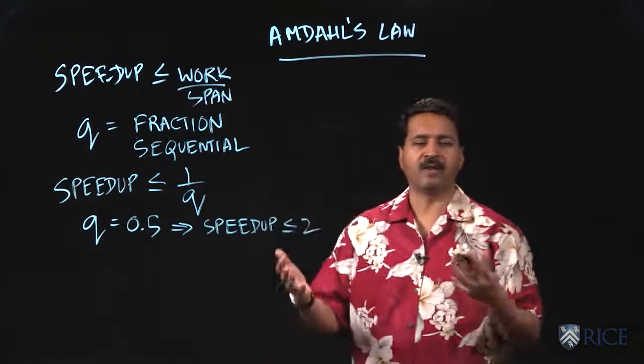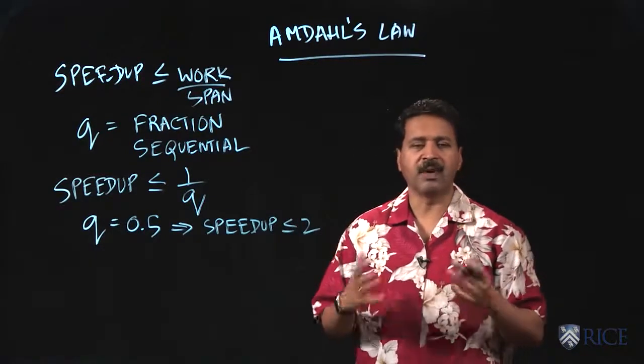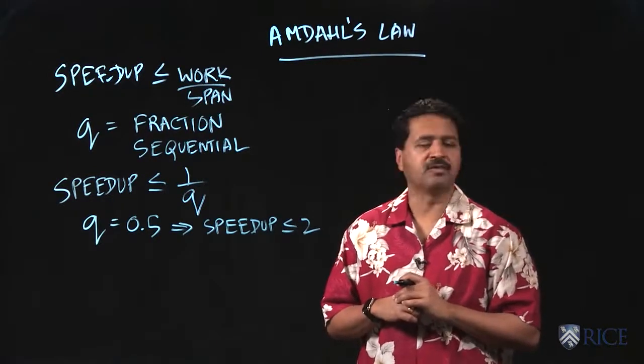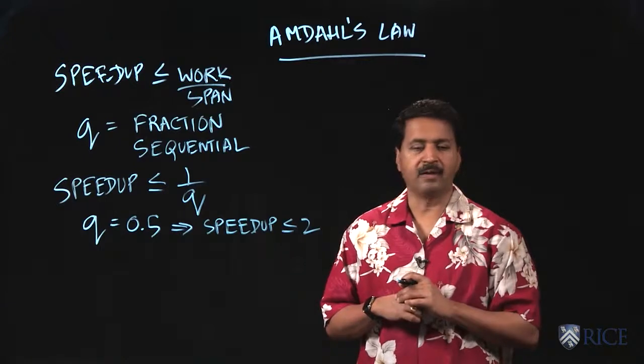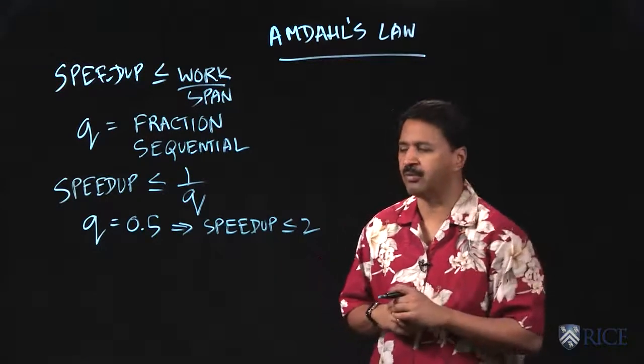So intuitively, if half your application runs sequentially, the best case speedup you can get, no matter how many cores you have, is a factor of 2. And you would advise your boss for that kind of workload to not bother getting a large parallel computer.